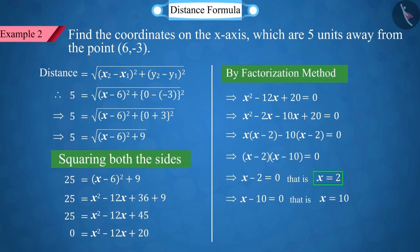x is equal to 2 and 10. So, we can say that there are two coordinates, (2,0) and (10,0), located on the x-axis.